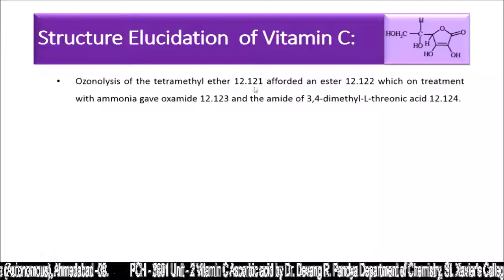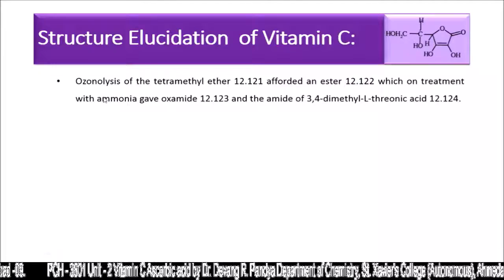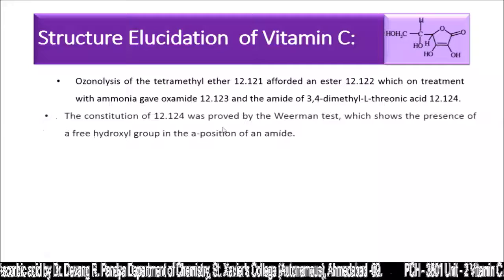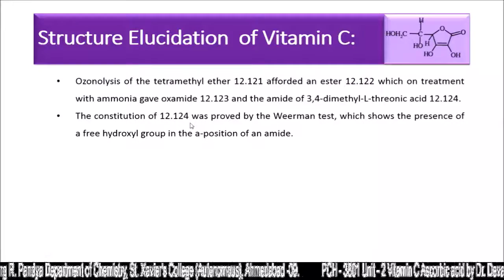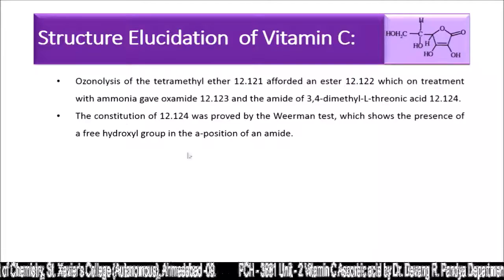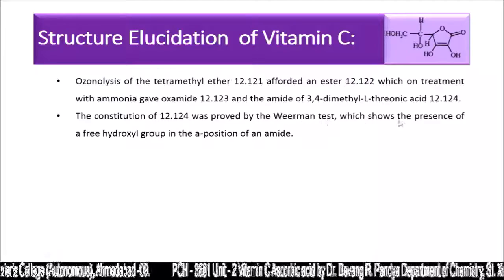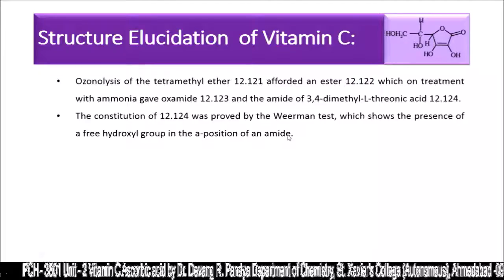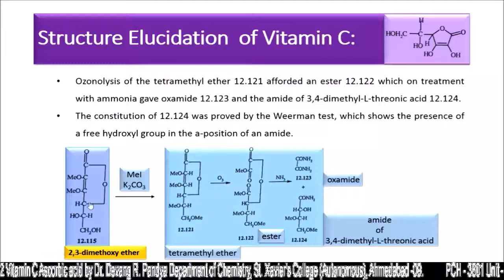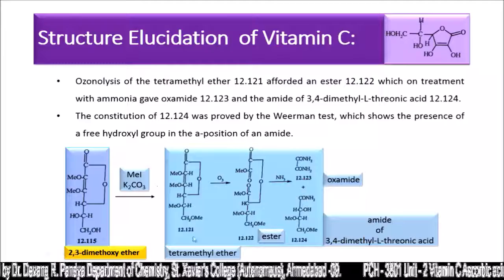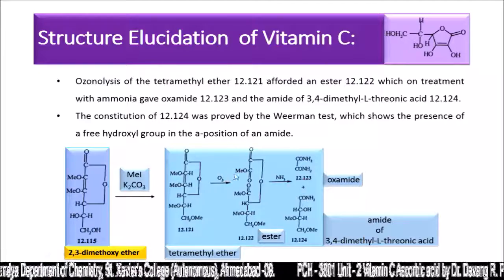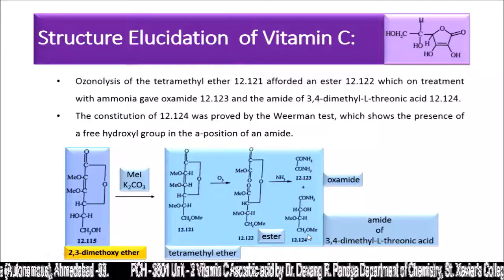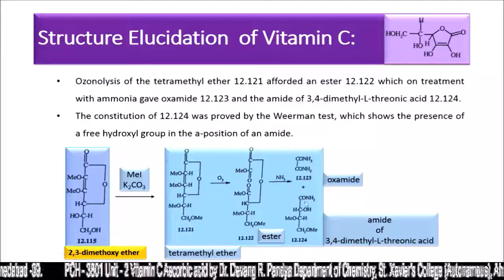Ozonolysis of the tetramethyl ether afforded an ester which on treatment with ammonia gave oxamide and the amide of 3,4-dimethyl L-threonic acid. The constitution of structure 12.124, that is 3,4-dimethyl L-threonic acid, was proved by the Weerman test, which shows the presence of a free hydroxyl group in the alpha position of an amide. The 2,3-dimethyl ether treated with methyl iodide in presence of potassium carbonate gives tetramethyl ether, which on ozonolysis gives the ester, and the ester with ammonia gives oxamide and the amide of 3,4-dimethyl L-threonic acid.